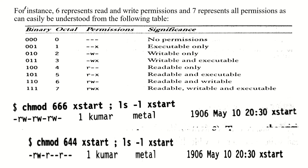The octal permission table: 000 = no permissions, 001 = execute only, 010 = write only, 011 = write and execute, 100 = read only, 101 = read and execute, 110 = read and write, 111 = read, write, and execute (value 7). With three categories each having one octal digit, three octal digits completely describe file permissions. The most significant digit represents user and the least significant represents others.